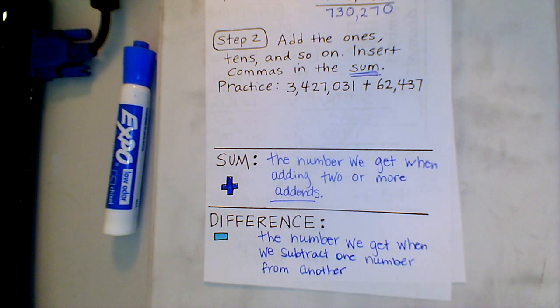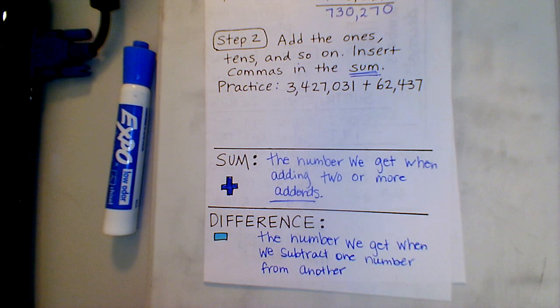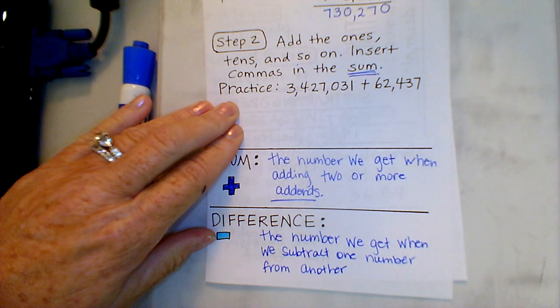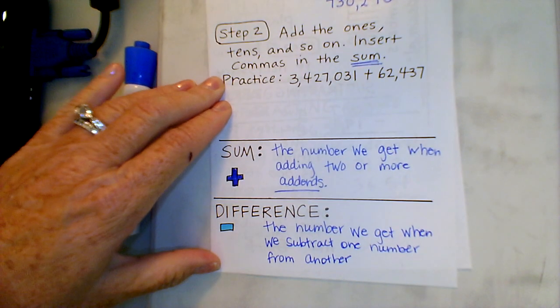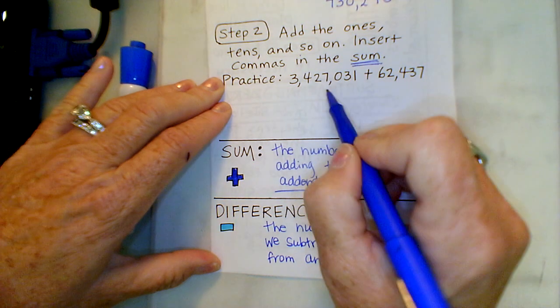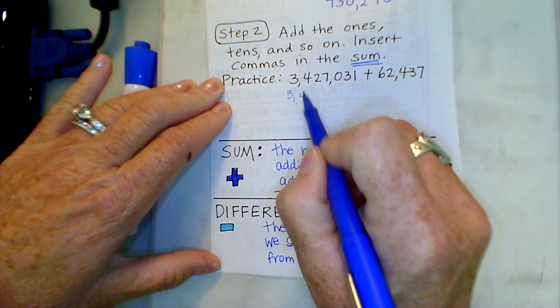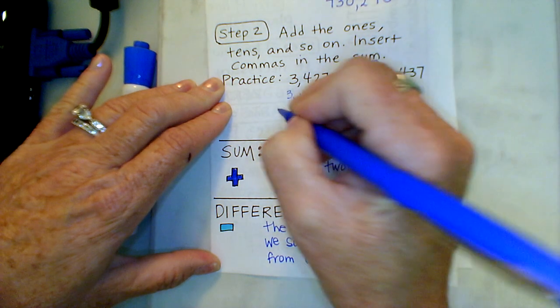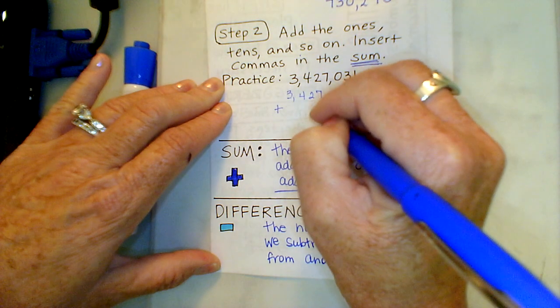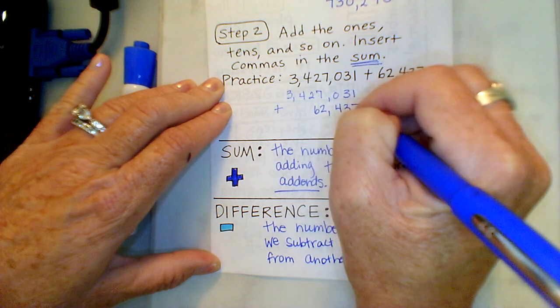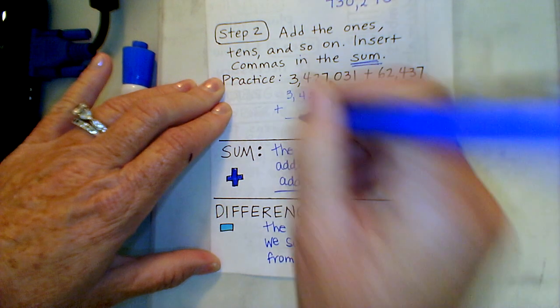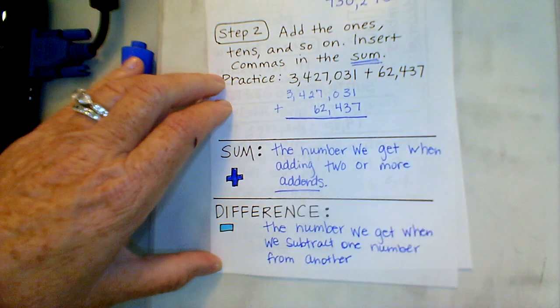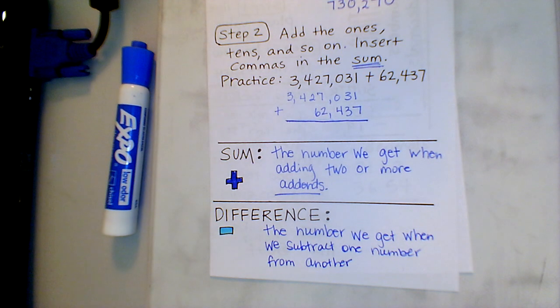So after you get that definition written, I want you to write out the practice, lining up your place value, and go ahead and work through that. Starting with your ones, then moving to your tens, then moving to your hundreds, all the way like you would normally add a number.